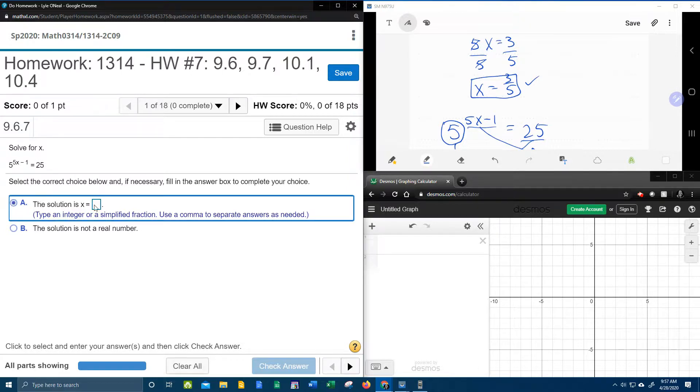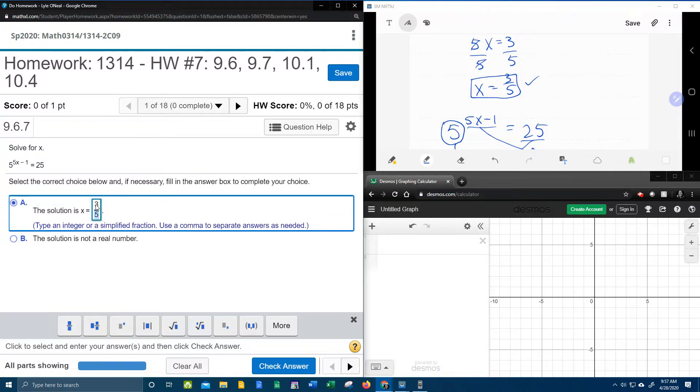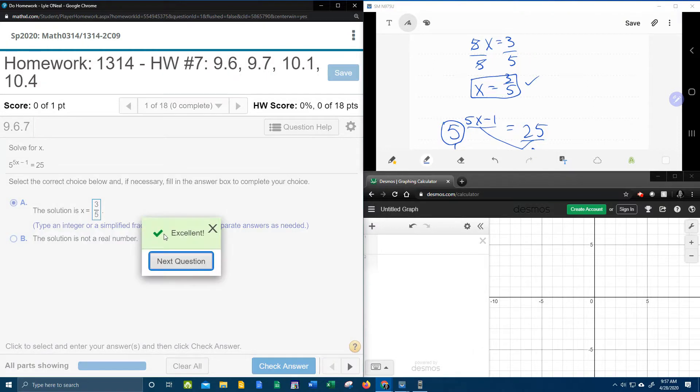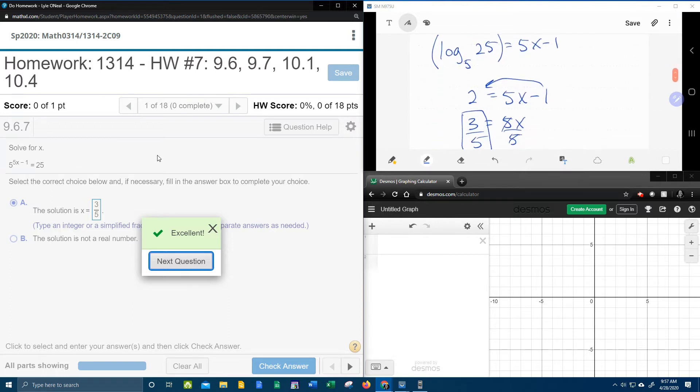So let's check and see if we're right. The answer is 3 fifths, and it does say a simplified fraction. All right, so there's the first problem down. I hope that was helpful. If you have any questions or comments, feel free to leave them in the comment section below, or you can text me. Thanks for watching.